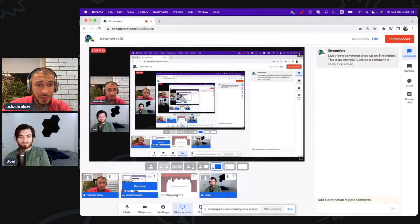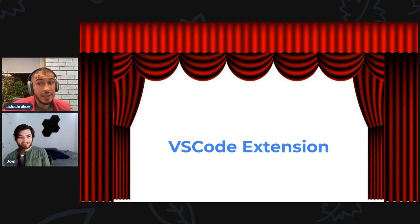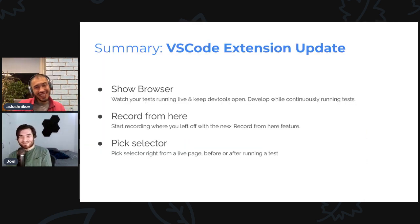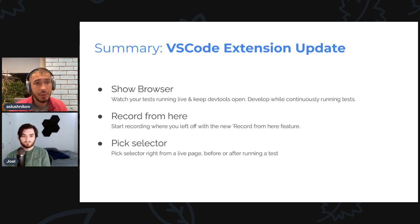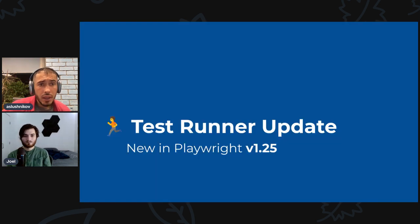So that was the VS Code extension with the new browser monitor. Last time we talked about it, it was in beta — it's still considered beta at version 0.2.10, but it's getting better every release. The killer features are: the new 'Show Browser' mode for debugging and seeing how tests run, the new 'Record from here' feature, and the ability to pick selectors right from the browser monitor window.